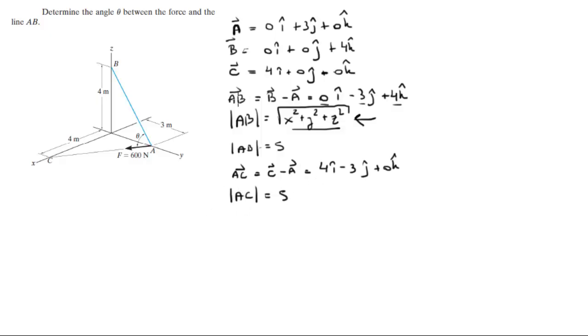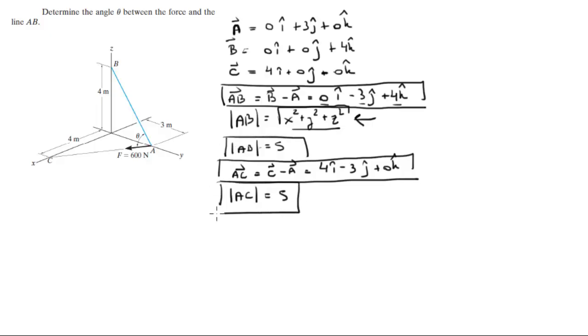Now that we have the magnitudes and the Cartesian vector form of the vectors, these are the Cartesian vector forms and these are the magnitudes, you can find the angle between them with the definition of the dot product. The definition of the dot product says that AB dot AC is equal to the magnitude of AB times the magnitude of AC times the cosine of the angle between them.